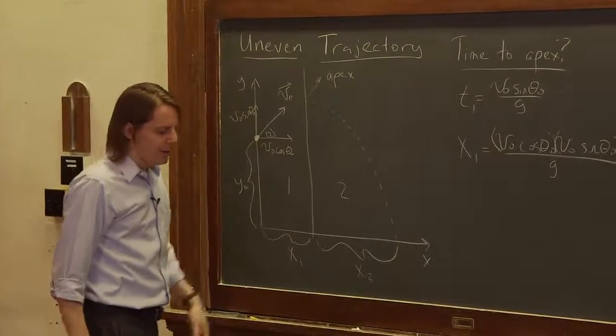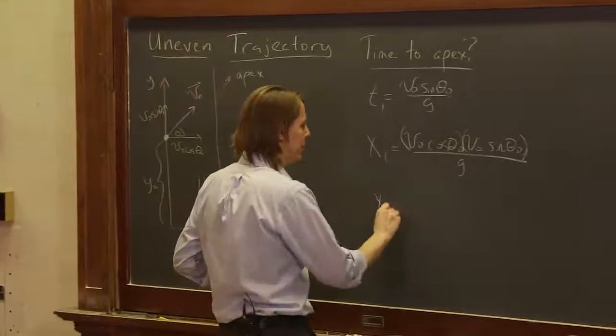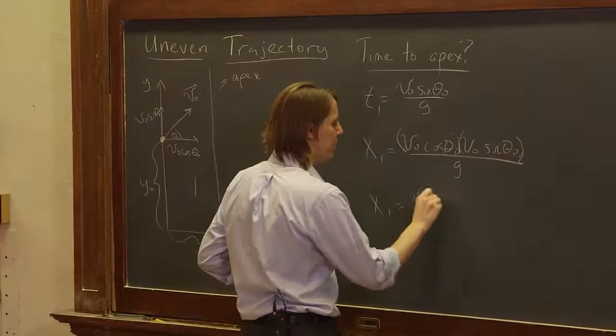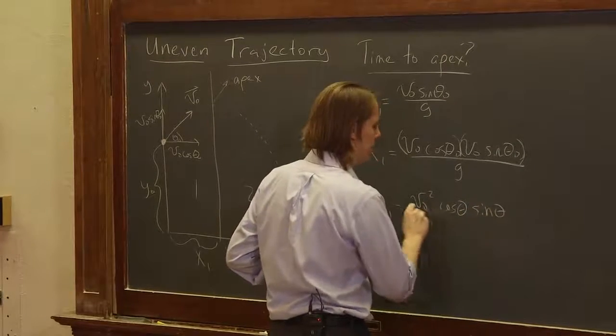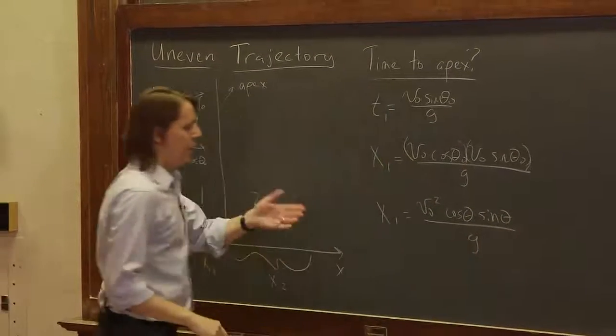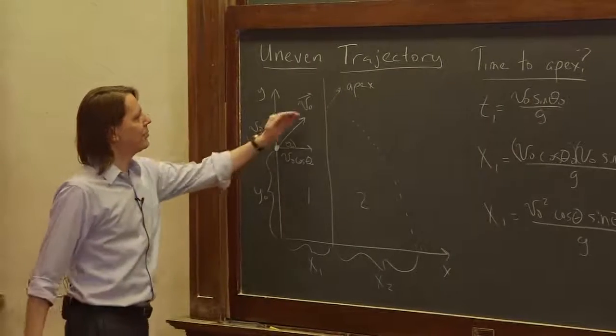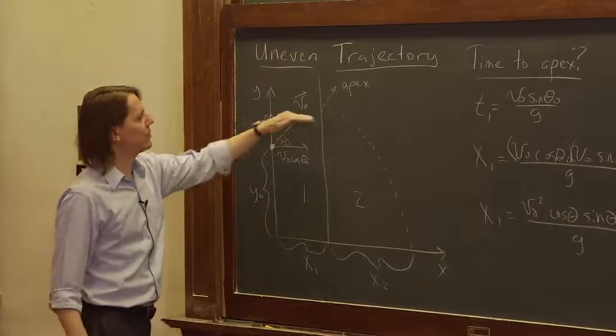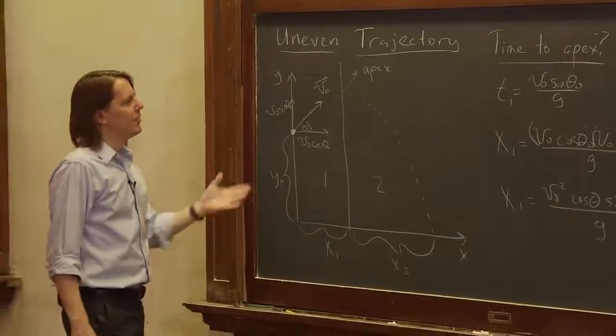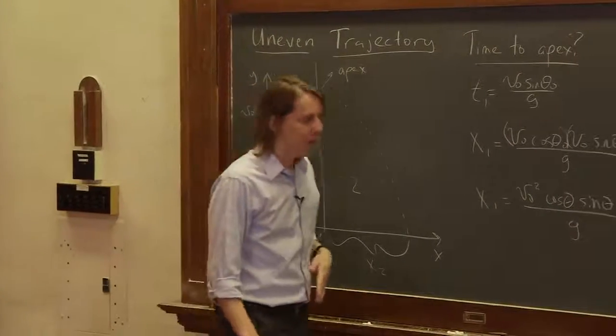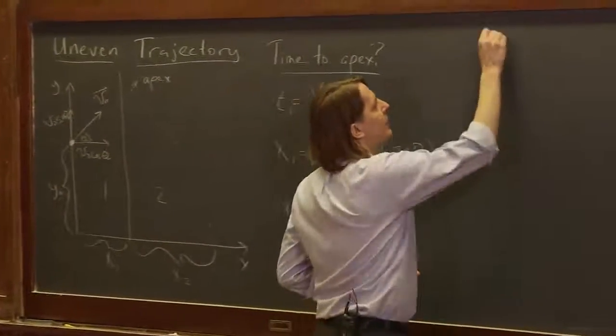So there is x1. And we can simplify it a little bit. We could call it v0 squared cosine theta sine theta over g. Which is similar to what we found before. Because so far, this looks like a normal trajectory problem. We haven't done the part where it falls too low yet. But anyway, there's a couple of important numbers.